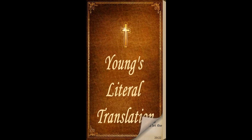Chapter twenty-six. And thou dost make the tabernacle ten curtains of twined linen and blue and purple and scarlet with cherubs, work of a designer, thou dost make them. The length of the one curtain is eight and twenty by the cubit, and the breadth of the one curtain four by the cubit; one measure is to all the curtains.